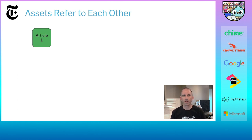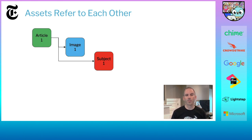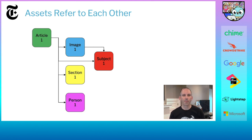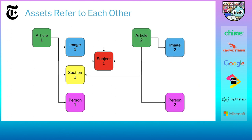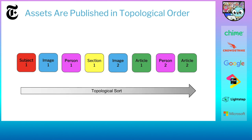It's important to note that assets refer to each other — we think of them as parent-child relationships. The article I showed you before referred to the image, and it also referred to the subject of astronomy. The image itself also refers to the subject. Another article might be about space and astronomy in the science section but written by a different author with a different image. When these things are published, we think of them as published in topological order — sequentially. To publish, preview, and display an article properly, everything it refers to has to come before it.